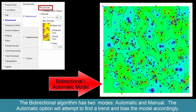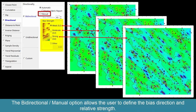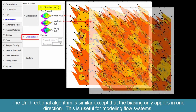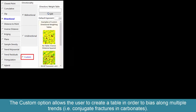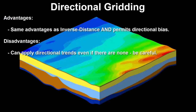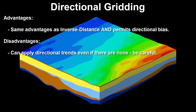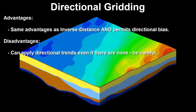The automatic option will attempt to find a trend and bias the model accordingly. The bidirectional manual option allows the user to define the bias direction and relative strength. The unidirectional algorithm is similar, except that the biasing only applies in one direction — useful for modeling flow systems. The custom option allows the user to create a table to bias along multiple trends, such as conjugate fractures within carbonates. Advantages: same as inverse distance, but also permits directional bias. Disadvantages: it can apply directional trends even if there are none, so be careful.